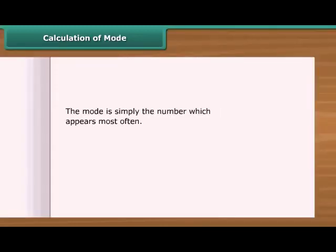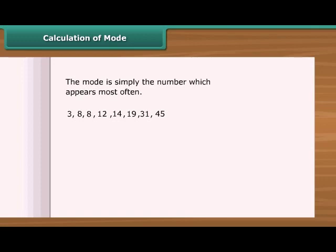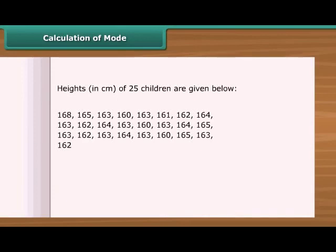The mode is simply the number which appears most often. See this example — we have a few numbers here. How can we find the mode? To find the mode, we need to first put the numbers in order, then count how many of each number, and see which number appears most often. In this case, 8 appears 2 times, so the mode is 8. Now look at this data showing the height of 25 children in a class. Let us find out the mode of their heights.